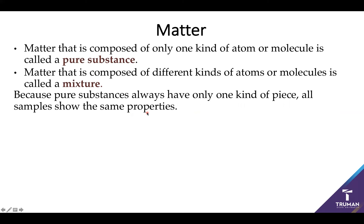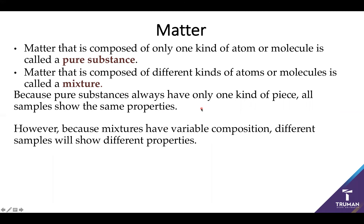Pure substances, since they only have one type of molecule, will always show the same properties. So if you know what the molecule is and you know it's a pure substance, you can predict its behavior, and this is really powerful in making predictive scientific models. However, mixtures are a little bit more messy because they do have variable compositions — you can have different ratios of molecules and you will have different properties. Sometimes you can predict the properties of a mixture by knowing the ratios of the molecules.